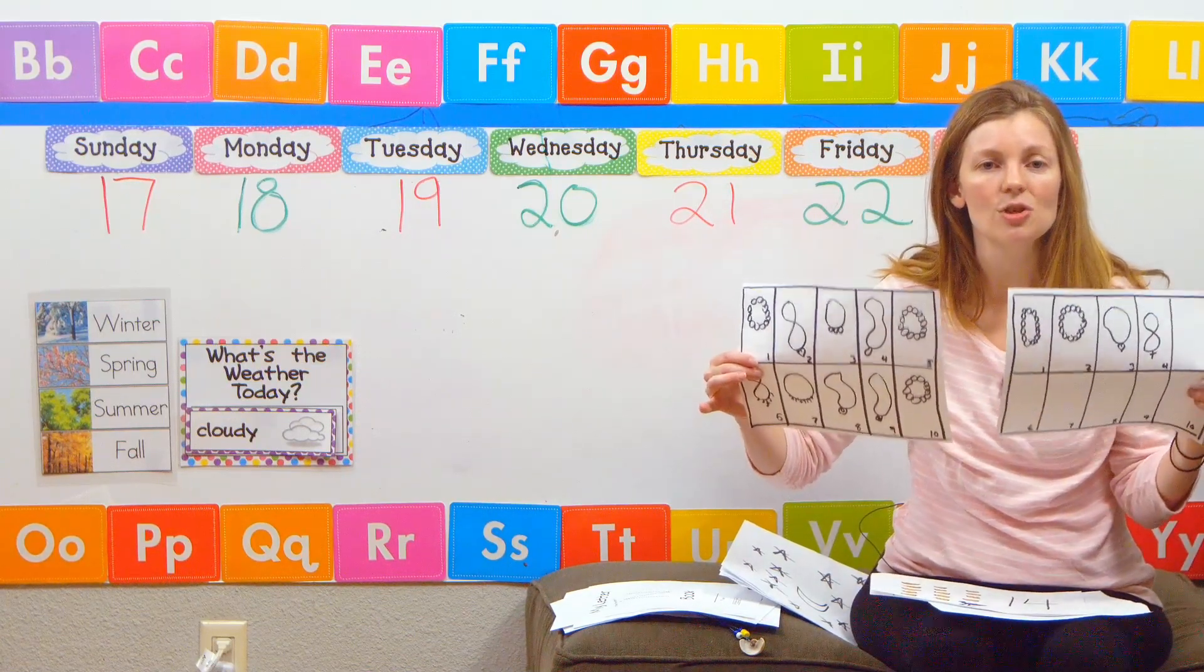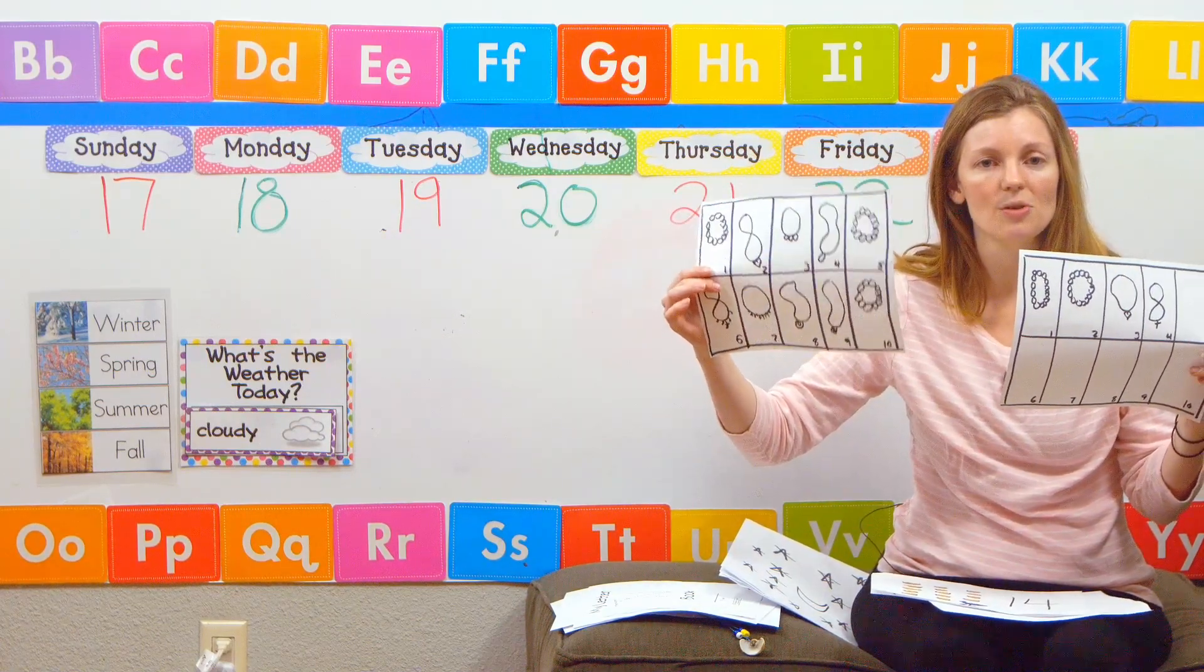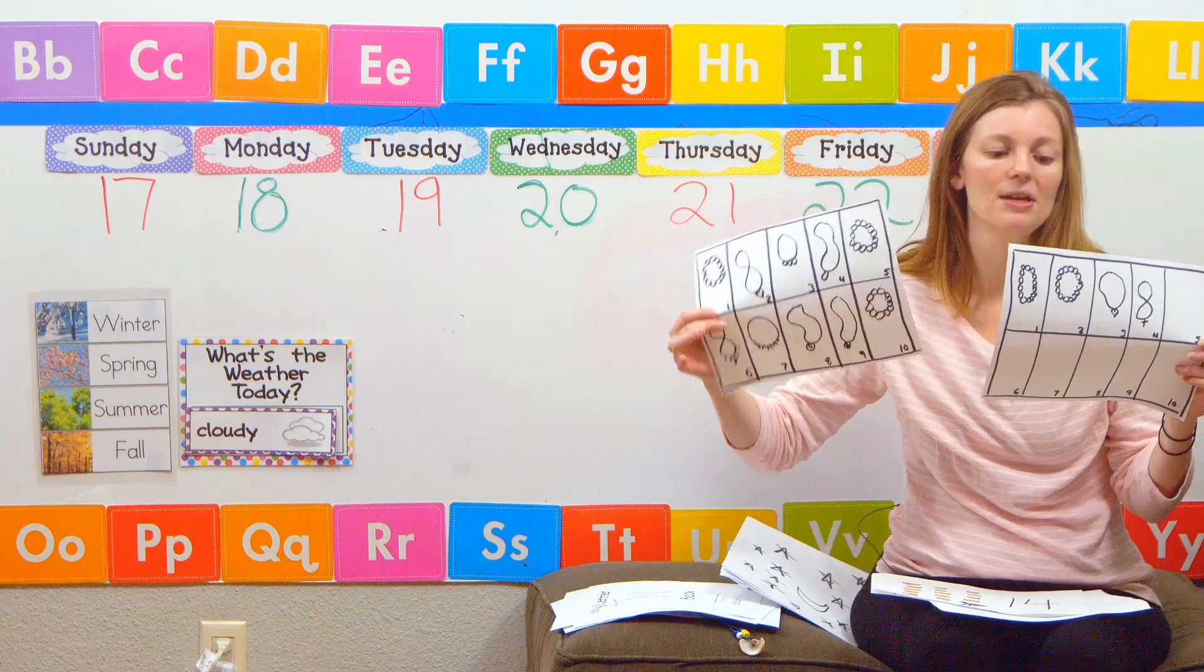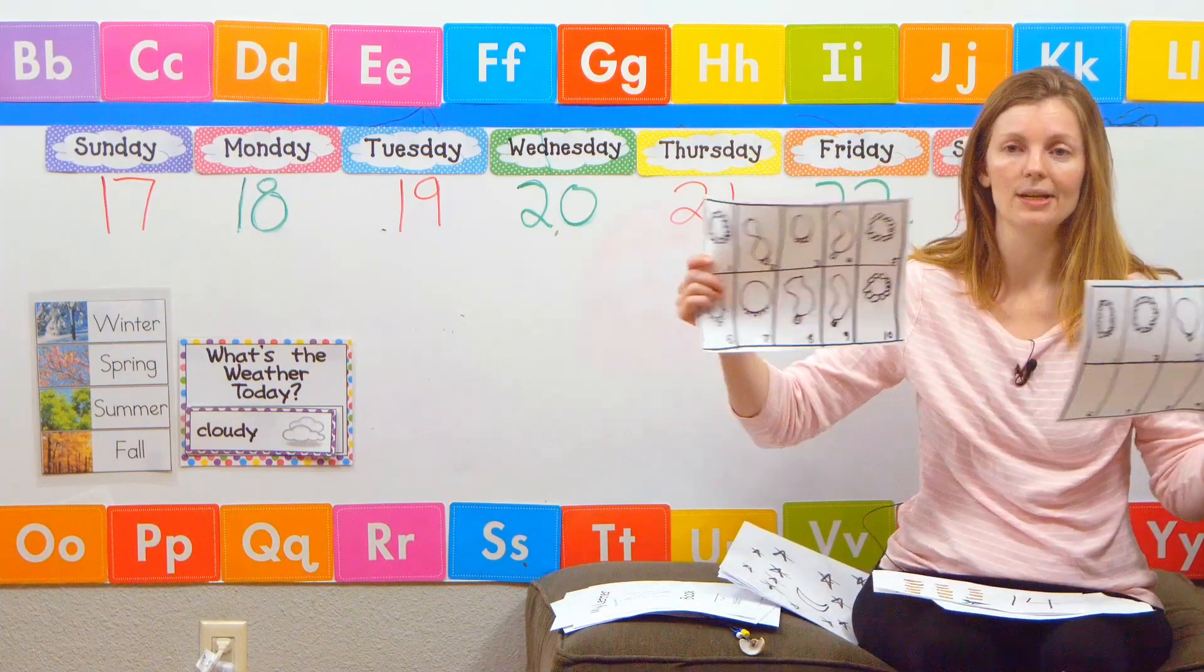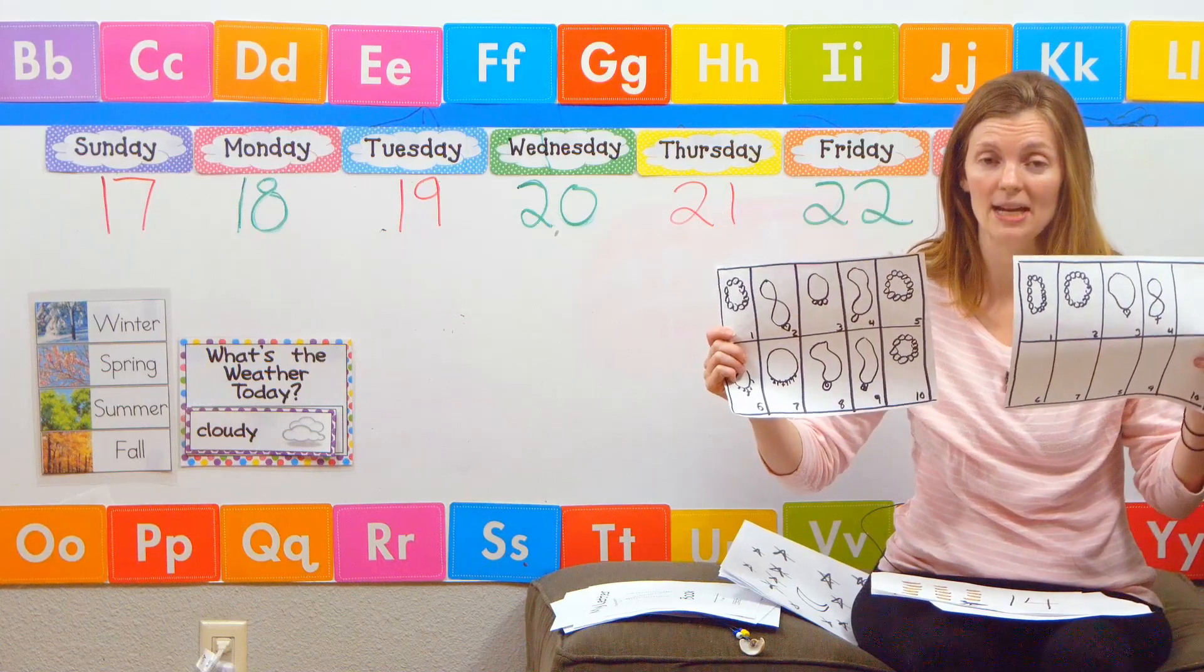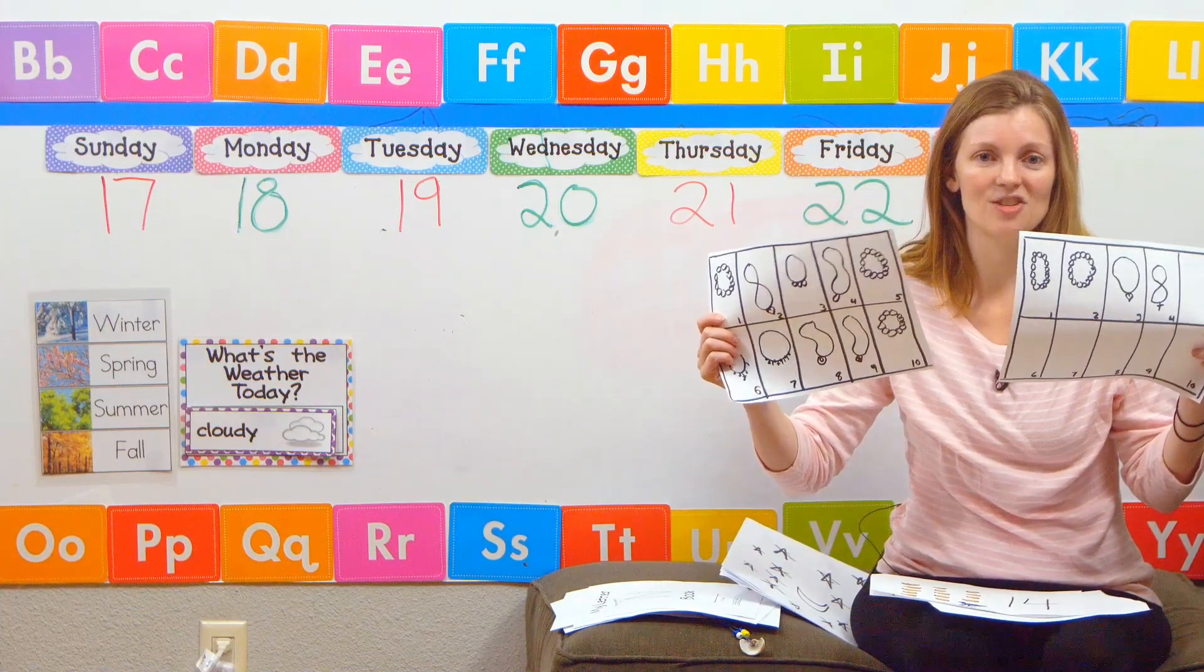My first way on Monday I showed you our tens frame. So we filled up our tens frame. So I know I have 10 necklaces over here. And then I have 1, 2, 3, 4 over here. So 10 plus 4 is 14. So I have 14 necklaces all together.